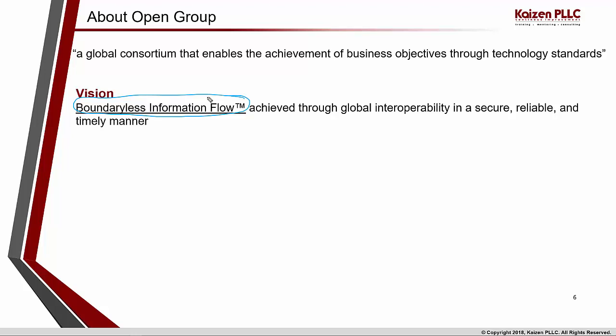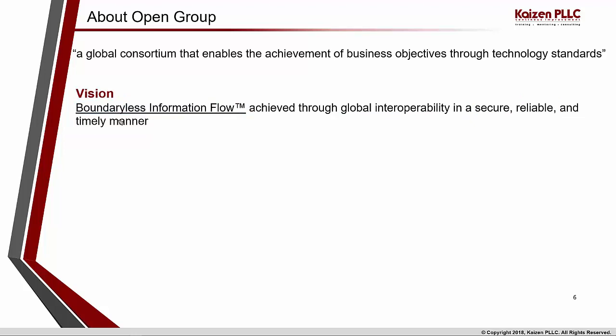What do we mean by boundaryless information flow? It is to successfully access integrated information to support business process improvements. This is done through global interoperability in a secure, reliable, and timely manner. In my later sessions I will have a dedicated topic on how boundaryless information flow is achieved. At this moment, what you should understand is that boundaryless information flow is the vision of the Open Group.